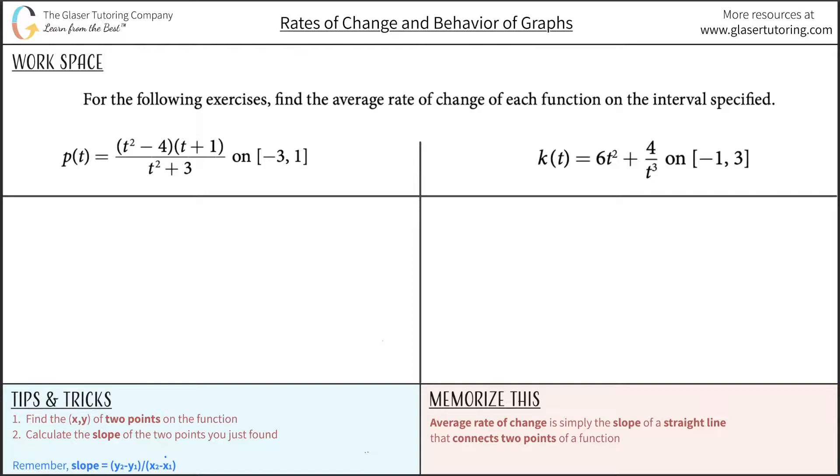For the following exercises, find the average rate of change of each function on the interval specified. What you first want to do is take this phrase and reinterpret that to mean the slope. The average rate of change is simply the slope of any two points of a function. I have that written down here also, so you can write that down if you like, but you should definitely memorize that.